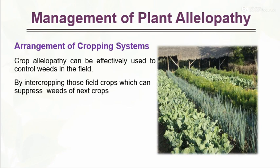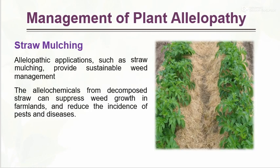Management of allelopathy. Through the arrangement of cropping systems, we can manage plant allelopathy. Allelopathic crop allelopathy can be effectively used to control weeds in the field by intercropping those field crops which can suppress the weeds of the next crop. Straw mulching is another management approach — allelopathic applications such as straw mulching provide sustainable weed management. Allelochemicals from decomposed straw can suppress weed growth in farmlands and reduce the incidence of pests and diseases.